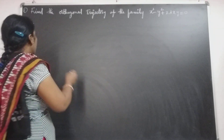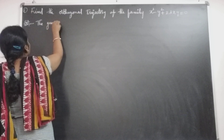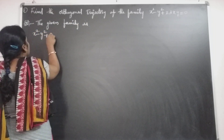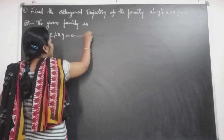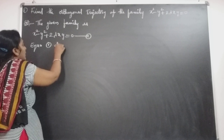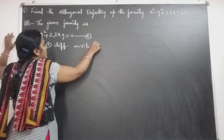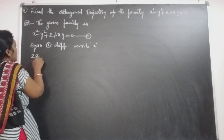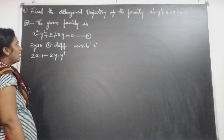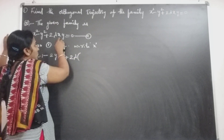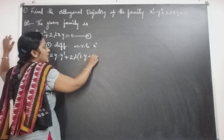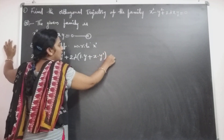The given family is x² - y² + 2λxy = 0. Let this be equation 1. Differentiating equation 1 with respect to x: the differentiation of x² is 2x, minus the differentiation of y² which is 2y·(dy/dx), plus 2λ times the differentiation of xy using the product rule gives y + x·y' = 0.